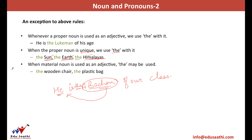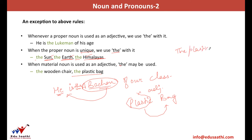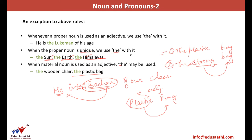Lastly, if a material noun is being used as an adjective, we write 'the' in front of it. For example, 'the plastic bag' — here plastic is not a noun, it is an adjective telling you the quality of the bag. To better understand, compare 'the plastic bag' with 'the strong bag' — strong tells you the quality of the bag, and similarly plastic tells you what sort of bag it is: it is made of plastic. So it is an adjective, and we can use 'the' in front of adjectives.